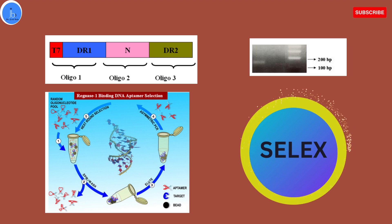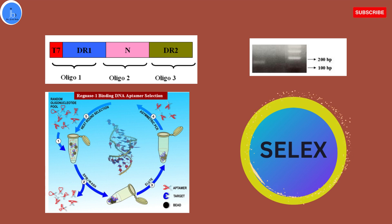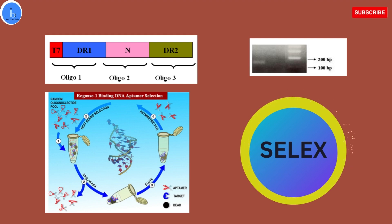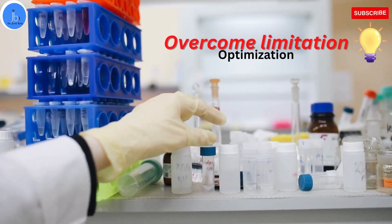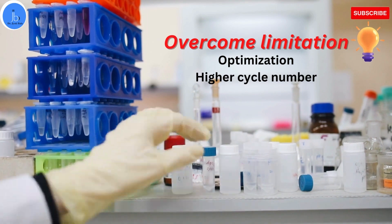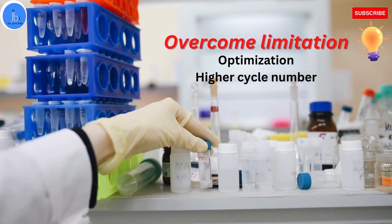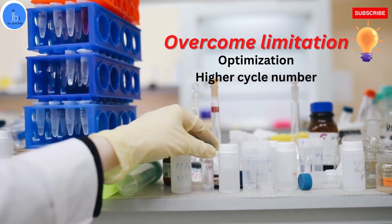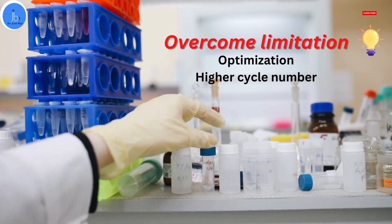I myself have done asymmetrical PCR several times for my DNA aptamer selection project during my PhD. With time and practice you can also standardize these experiments — you just have to work on the annealing temperature, different primer concentrations, template concentration, and PCR cycle number. You can also overcome the limitations of asymmetrical PCR by increasing the PCR cycle number and by using more starting material.